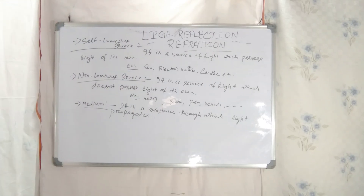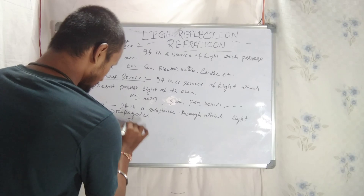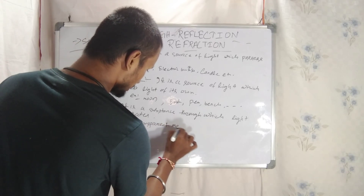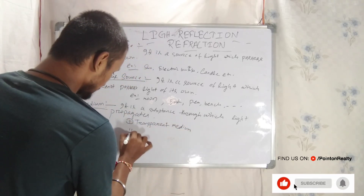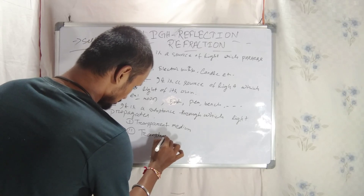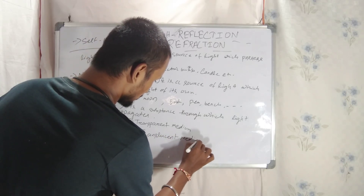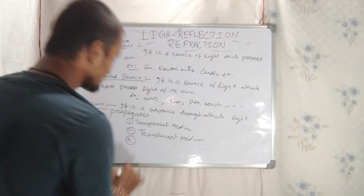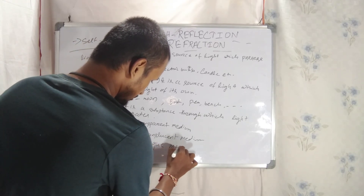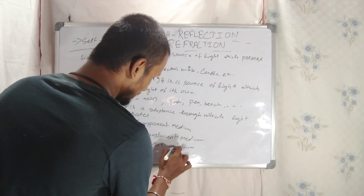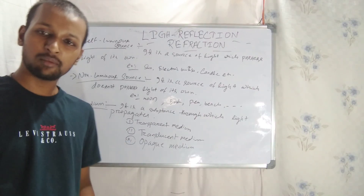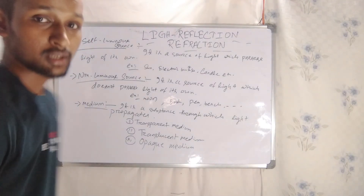Medium is of three types. The first one is transparent medium. The second one is translucent medium. And the third one is opaque medium.